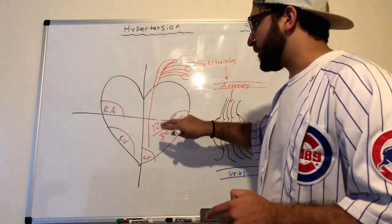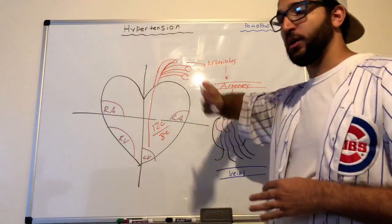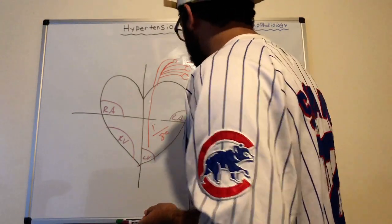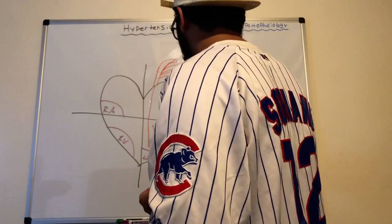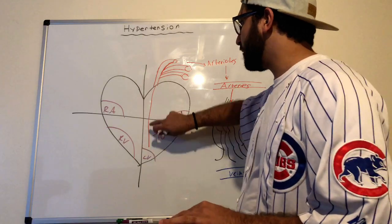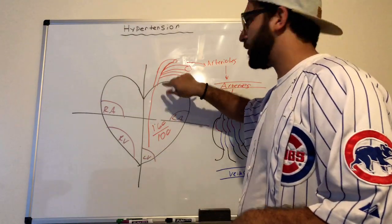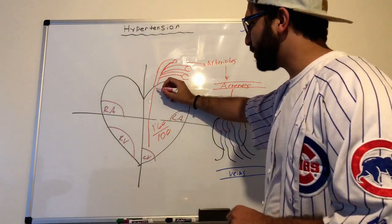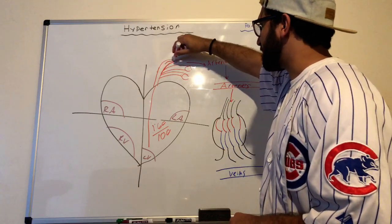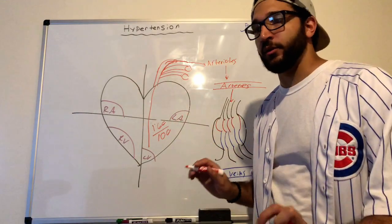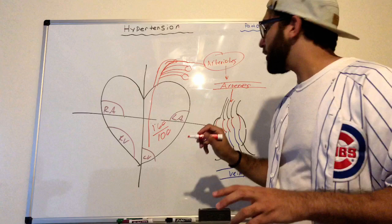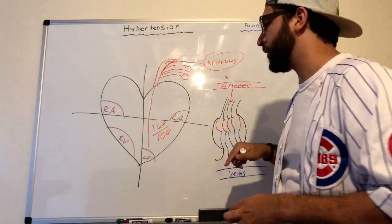In an unhealthy patient with blood pressure of 160 over 100, blood is pushed from the left ventricle through the aortic valve into the aorta. From there it goes to the arterioles. Normally arterioles slow down the blood pressure — they're supposed to halt it before it reaches the capillaries. But at elevated pressures, the arterioles can't keep up.